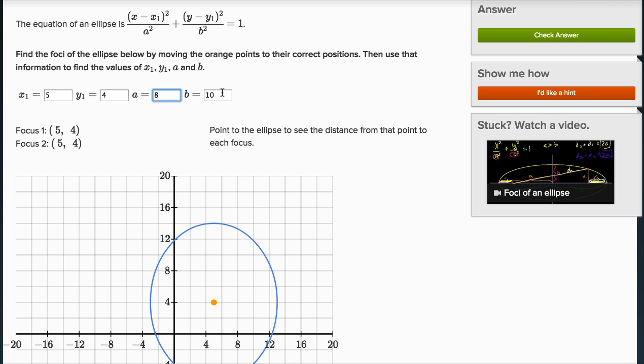And we already said the major radius is going to be in the vertical direction. And it is of length 10. So just like that, we figured out we could write the equation down. You could just say the equation of this ellipse is going to be (x - 5)² / 8² + (y - 4)² / 10² = 1.